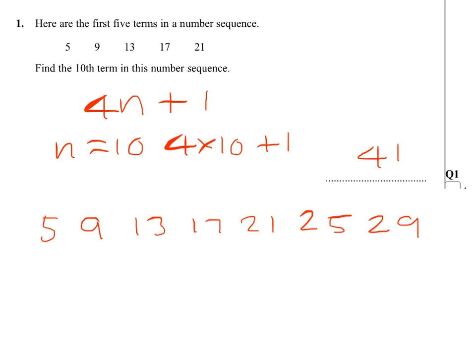5, 9, 13, 17, 21, 25, 29, 33, 37, 41. And just count as 1, 2, 3, 4, 5, 6, 7, 8, 9, 10. So 41 then.